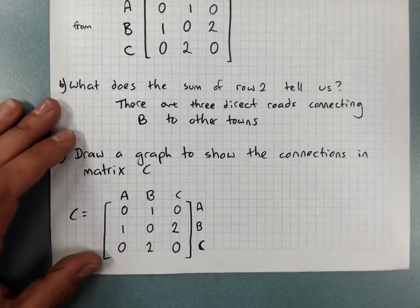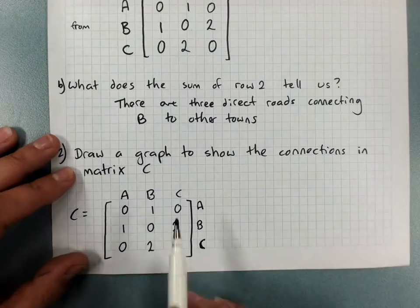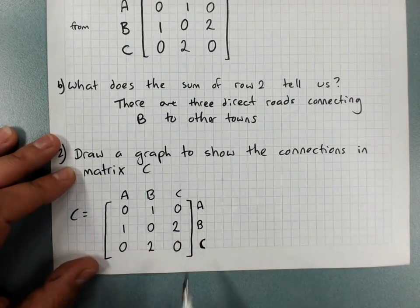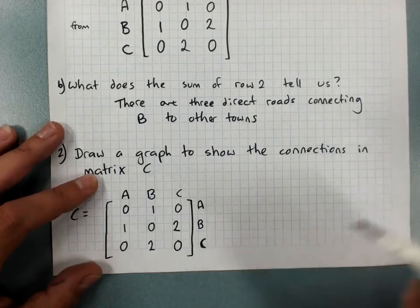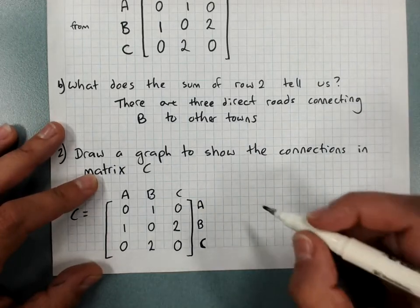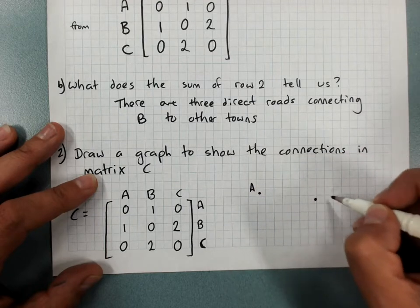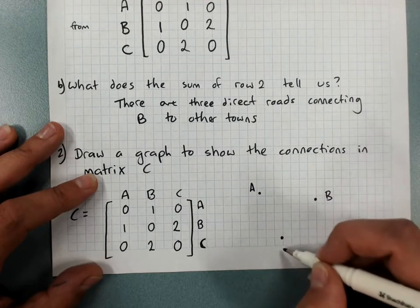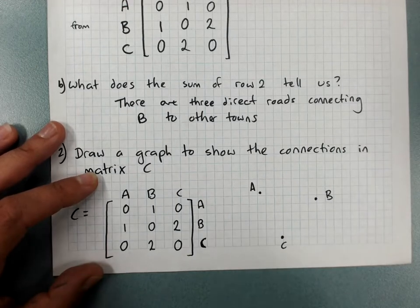And often we might have to draw a graph to show the connections in a matrix. Same thing. A, B and C. Now your graphs will look different because you get to choose where to put A, B and C. But really just pop them in somewhere not too ridiculous. Pop them in a group like that. Don't put them all in a straight line.